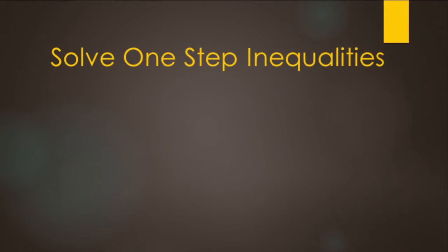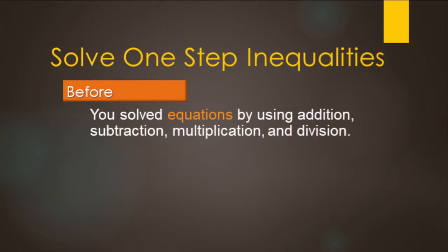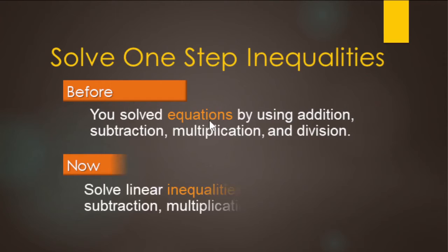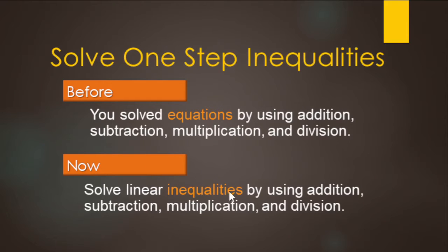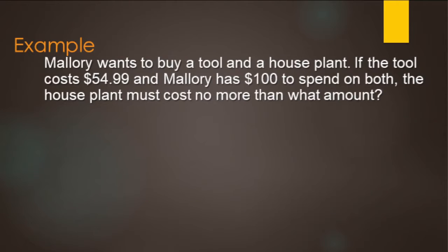All right, so in this video here, we're going to be solving inequalities that have one operation that we need to undo, or solving one-step inequalities. Now, we've done this with equations before, and it's pretty straightforward. The only thing we're changing is we're going from an equal sign to an inequality symbol instead. That's the main difference. There is another exception, which we'll touch on as well. So let's get into it.